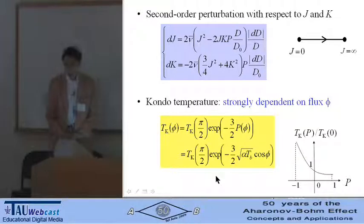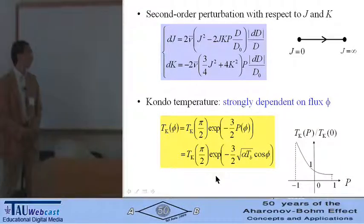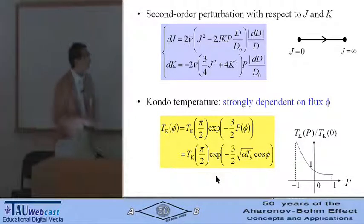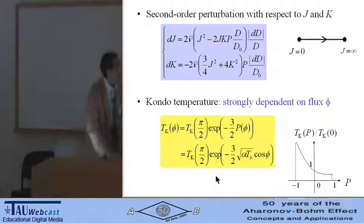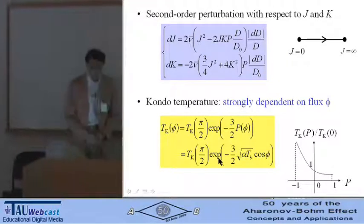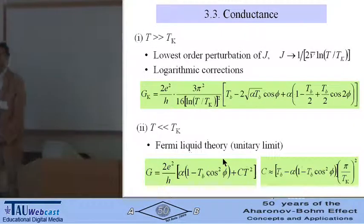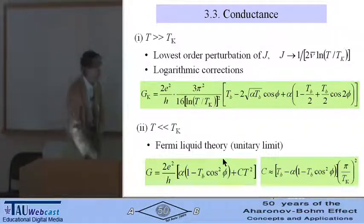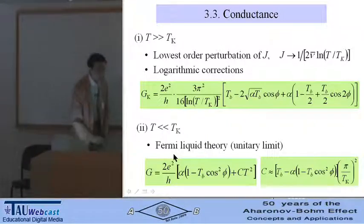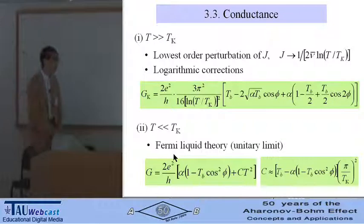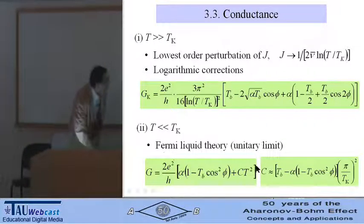This is our final result. The Kondo temperature is strongly dependent on the magnetic flux phi. Conductance can be calculated in the conventional way. At high temperatures, we obtain logarithmic corrections. At low temperatures, Fermi liquid theory yields the unitary limit and its corrections.